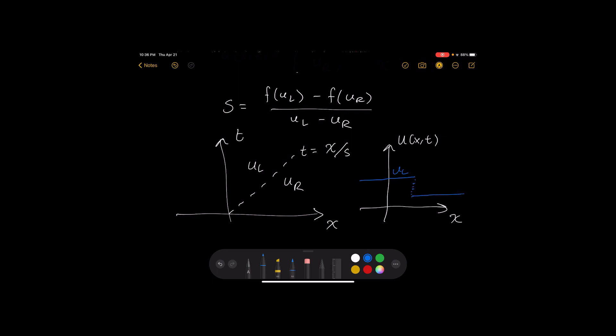So here's u_left, here's u_right, just two different constant values. And it is moving. Okay, it's moving with this speed s. So this is what I claim the solution is.